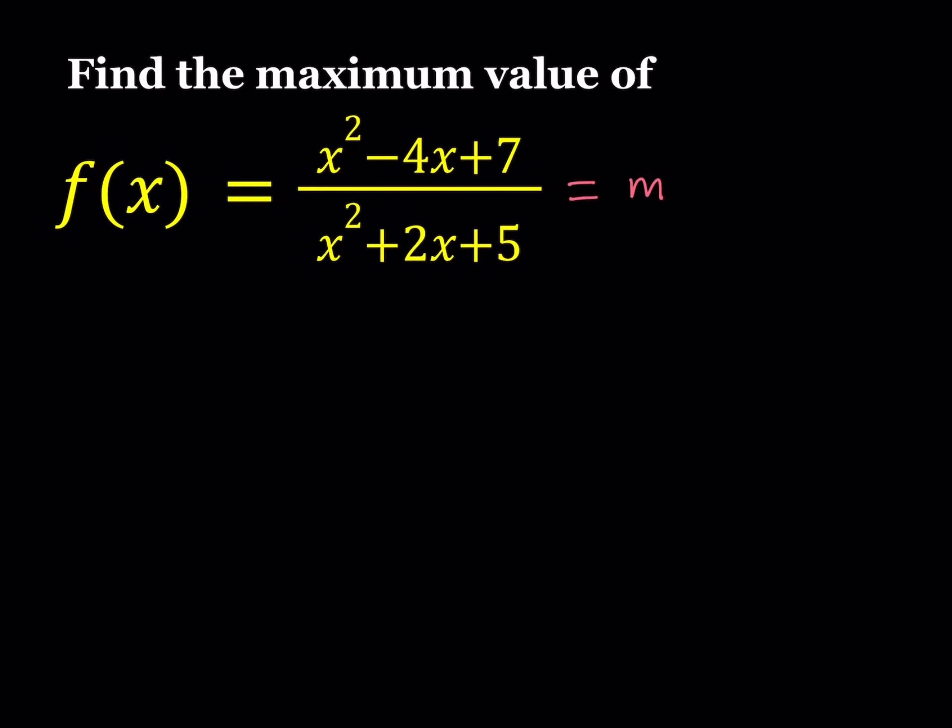So let's go ahead and cross multiply both sides and we should be getting x squared minus 4x plus 7 is equal to mx squared plus 2mx plus 5m.